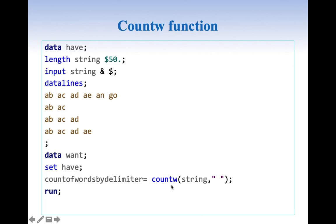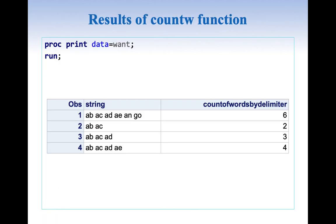COUNTW function is straightforward. All we need to tell it is what the delimiter is. And let's look at the PROC PRINT of COUNTW. COUNTW tells us there are six words in one case, two words in another, three words in another, and four words in the last case.